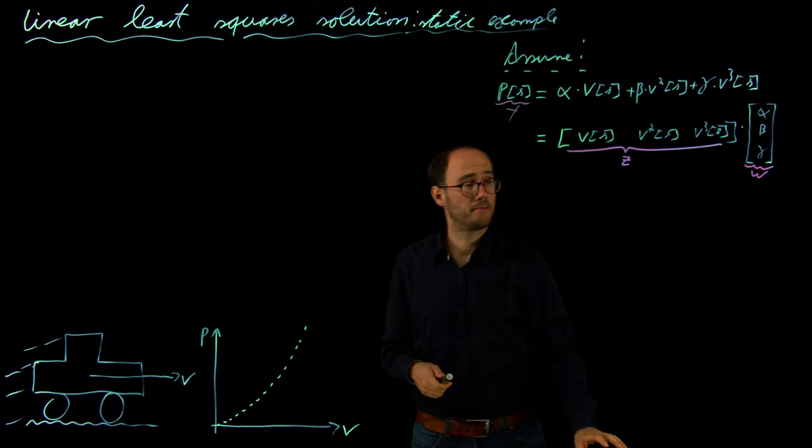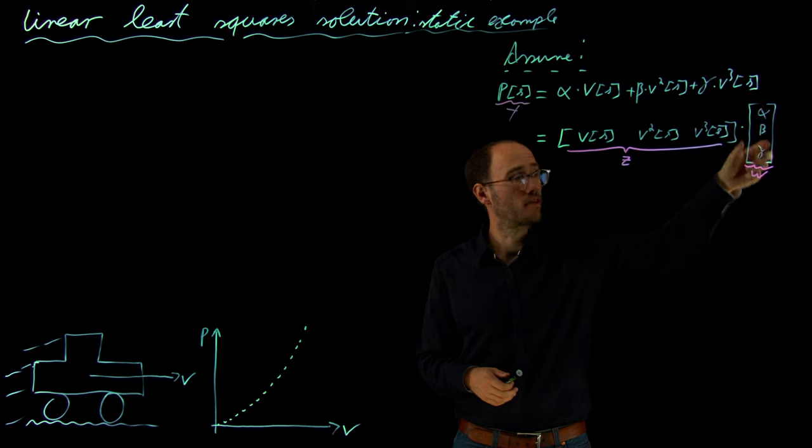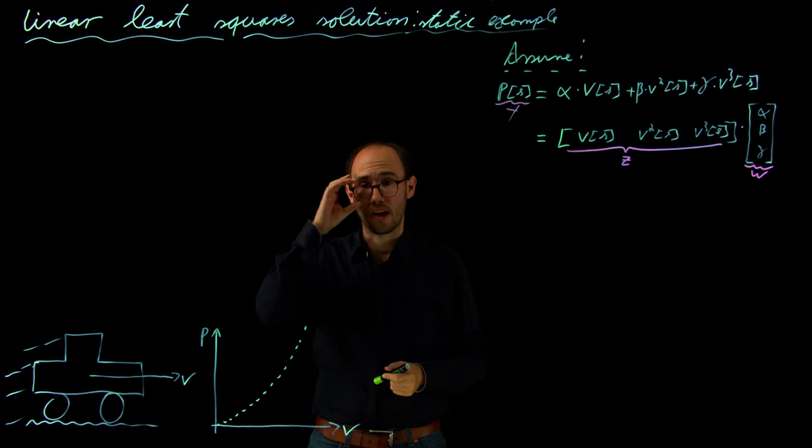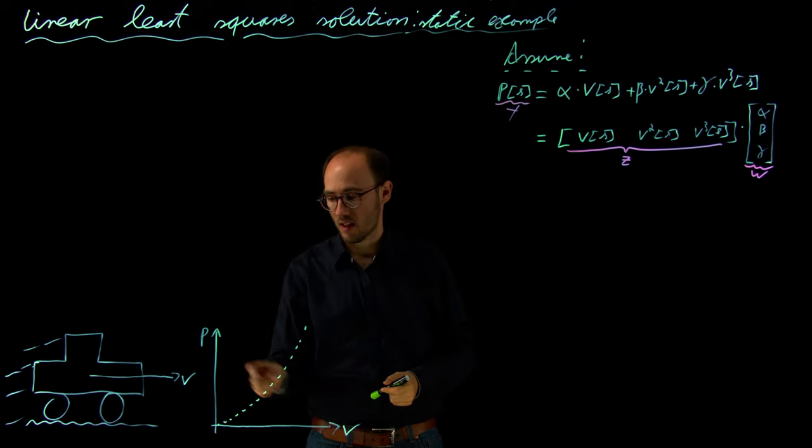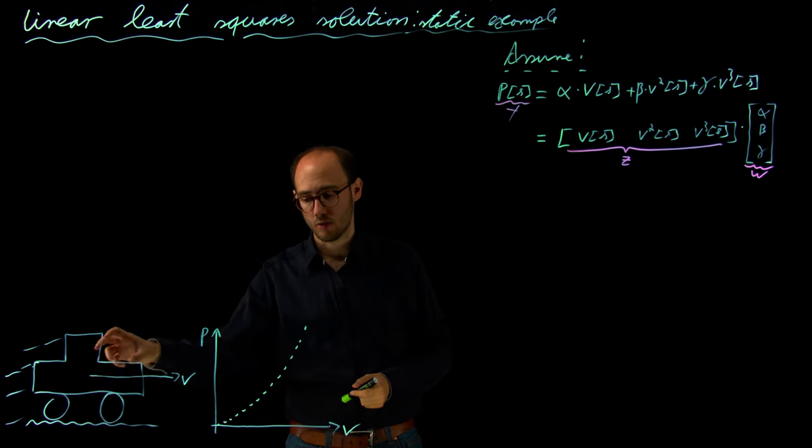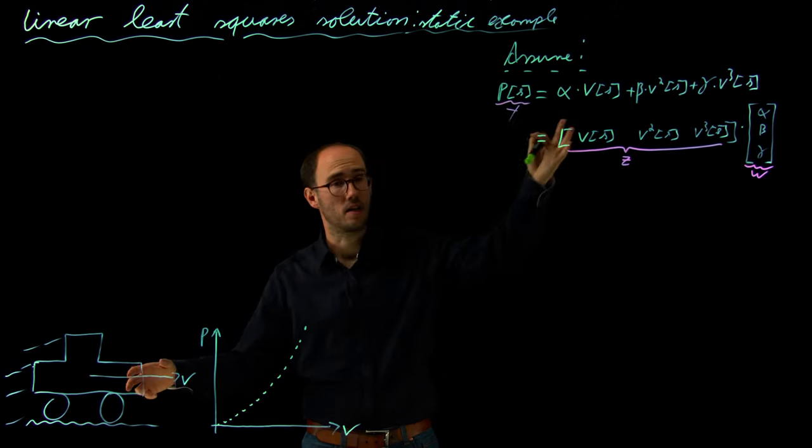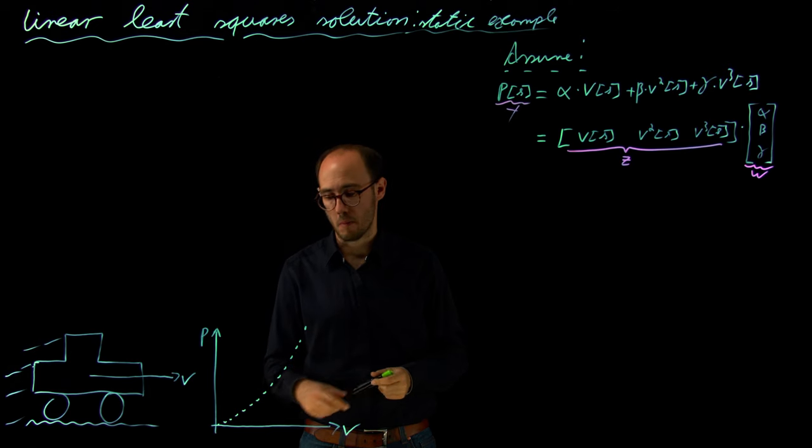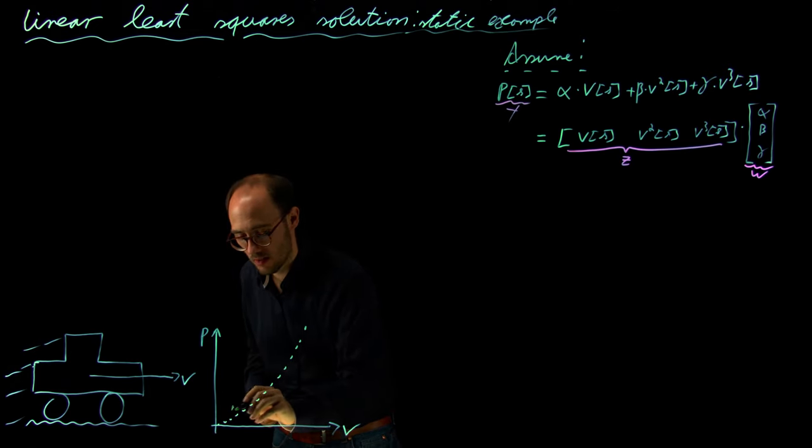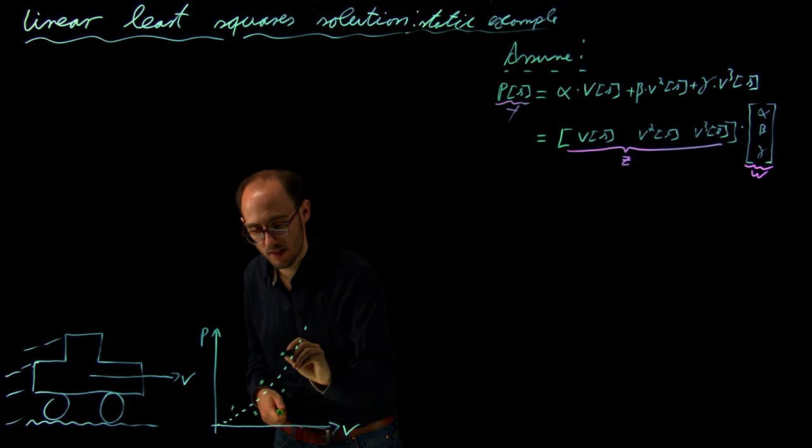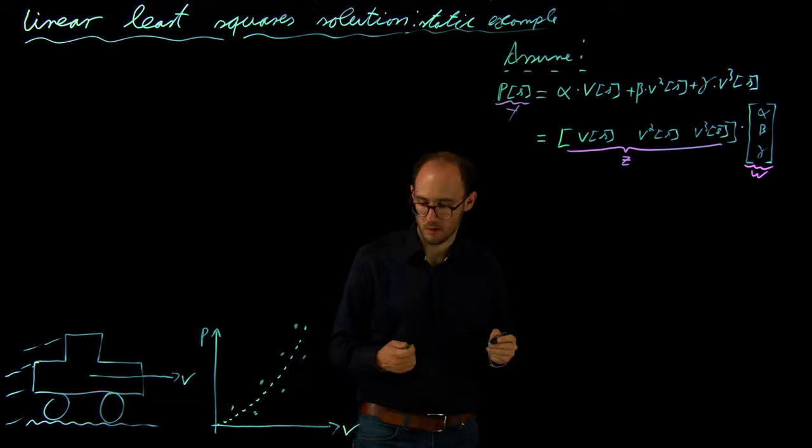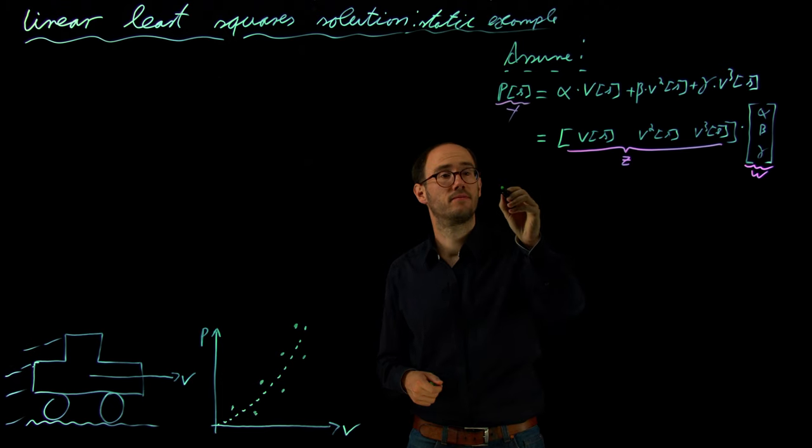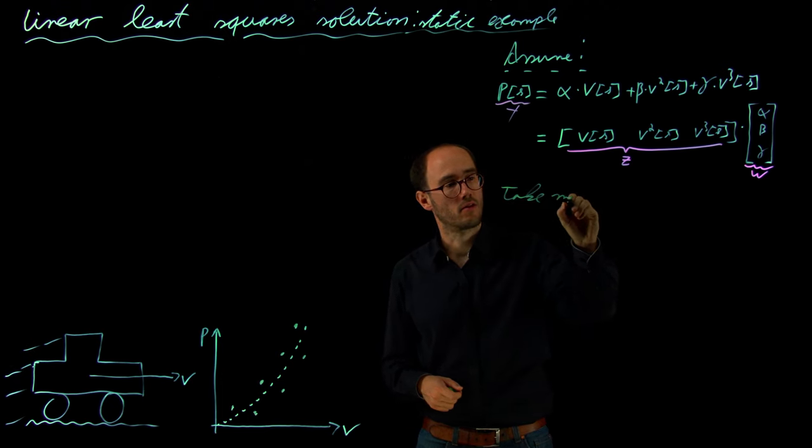And of course, we now want to identify this parameter vector w. So that means we take our car on a drive track or into the lab and we will measure the power which is required to maintain a certain speed in steady state because we're identifying here a static model against the velocity. So we will take different measurements around this idealized curve, potentially including measurement noise, which is depicted here. So we take measurements on the street or in the lab.